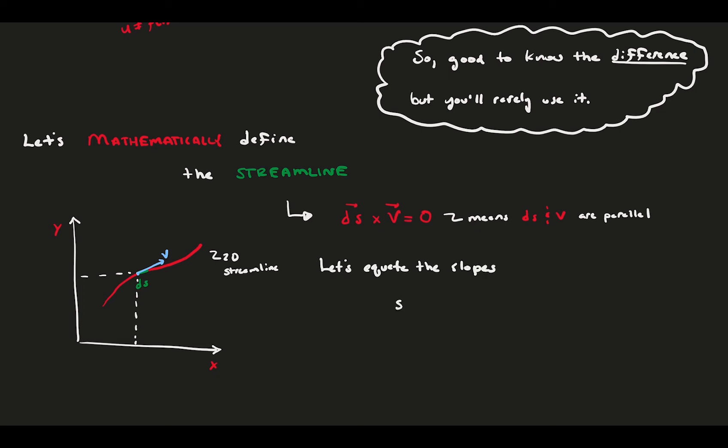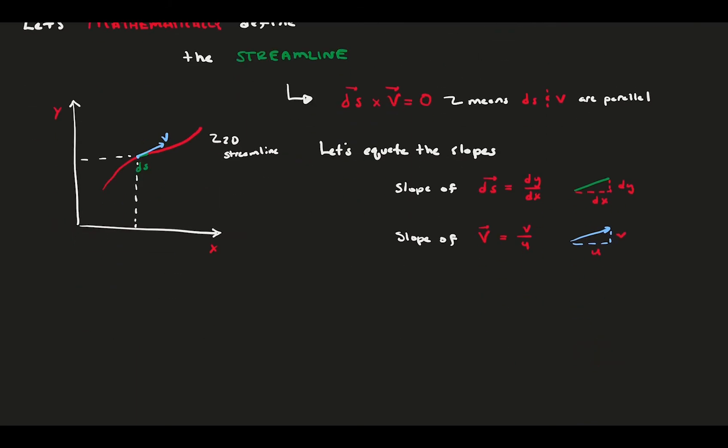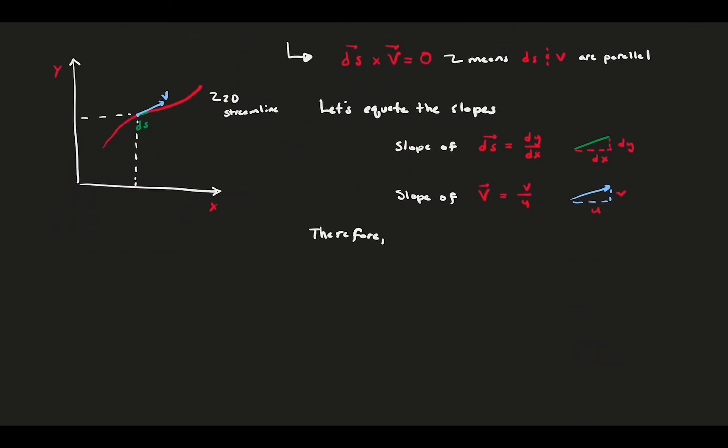The slope of ds is dy over dx. And the slope of the velocity is the y component of the velocity, v, divided by the streamwise component, u. Now, we set these two slopes equal to each other and rearrange, and we get the equation for a streamline in two-dimensional flow. In three dimensions, there are three streamline equations, shown here.